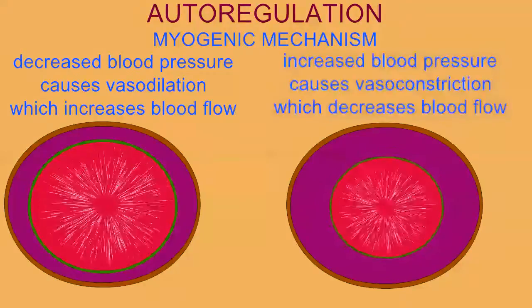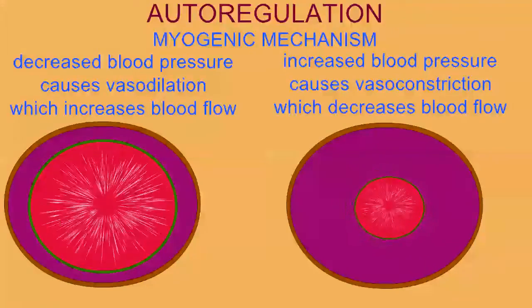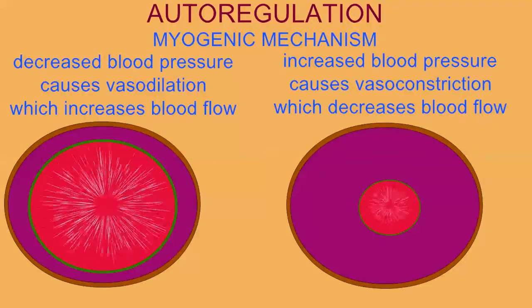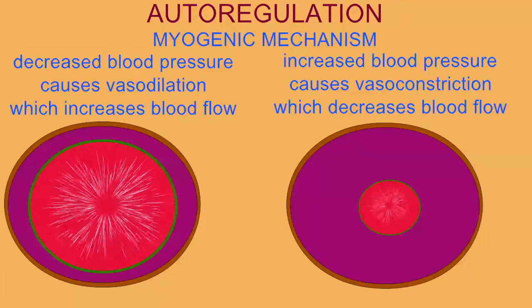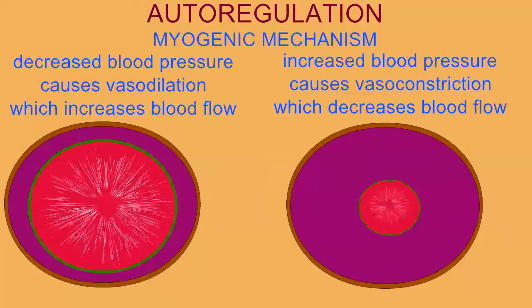while if the pressure is high it will constrict, causing less blood to flow. This is regulation at the tissue level performed by elements in the tissue itself.